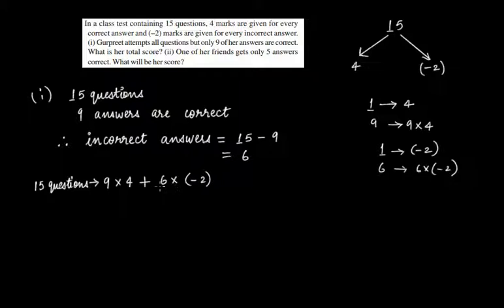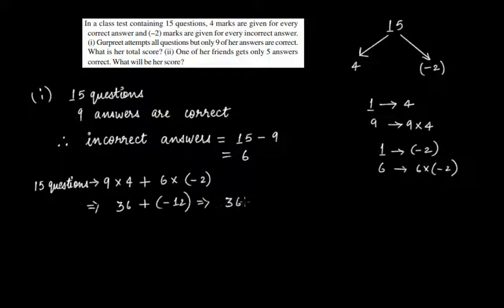This gives us 9 times 4 is 36, plus 6 times minus 2 is minus 12. So this gives 36 minus 12, and the answer will be 24. So 24 will be her total score.